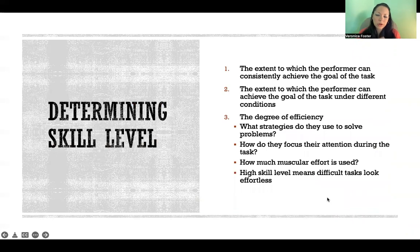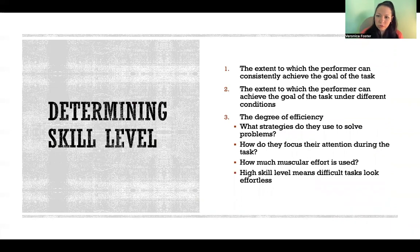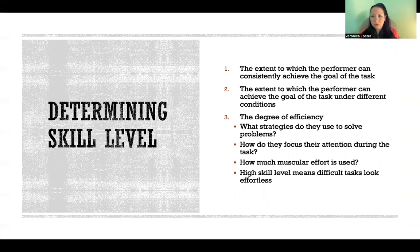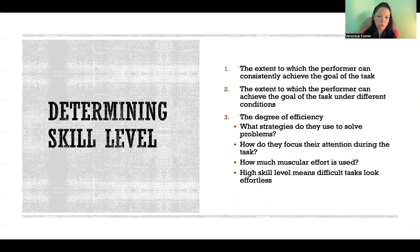There are three factors in determining skill level. The first is the extent to which the performer can consistently achieve the goal of the task. For example, maybe you're throwing a ball and trying to hit a target — how often do you achieve the goal of hitting it?